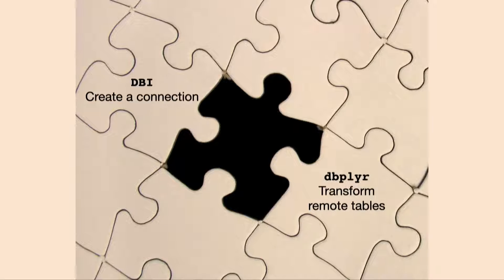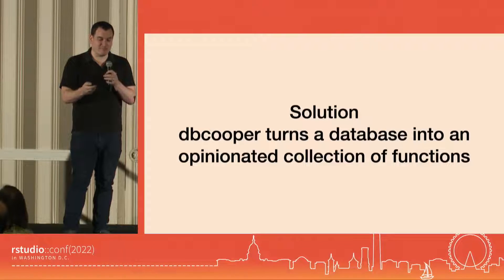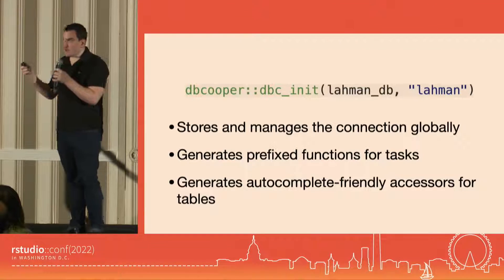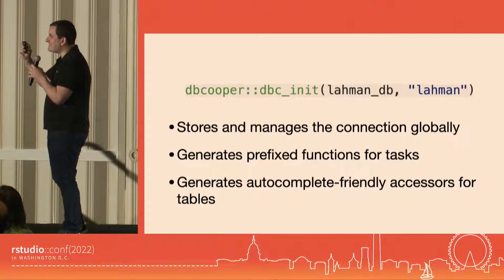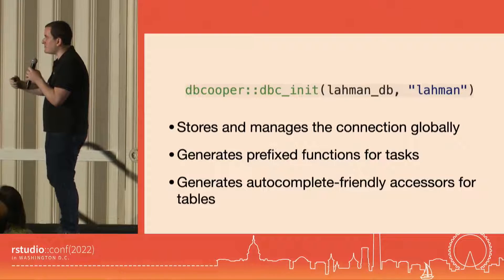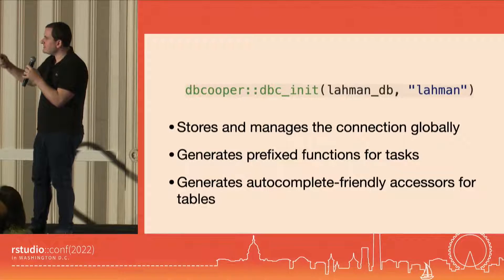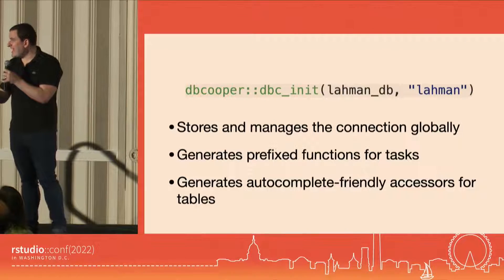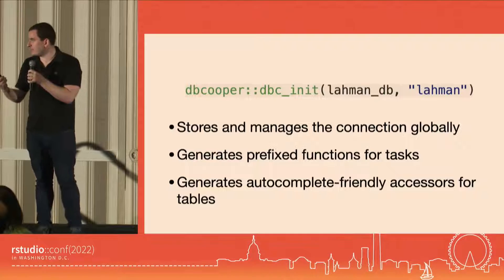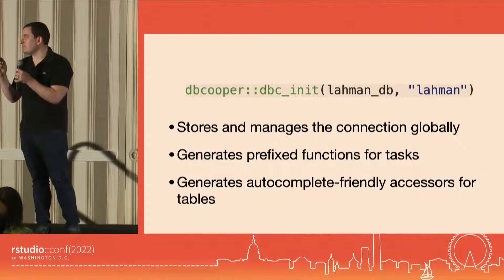So there's a missing puzzle piece in between DBI for creating a connection to a database and dbplyr for transforming and exploring those tables. That's where DB Cooper comes in. It turns a database into an opinionated collection of functions to let us explore it really fluidly, kind of as if it were data in memory. DB Cooper only needs one function call to set up: it's dbcinit. You pass it the connection object and give it a prefix. dbcinit stores and manages the connection globally, generates a prefixed function for important tasks you'd do with that database, and really importantly, it generates autocomplete-friendly accessors for tables.